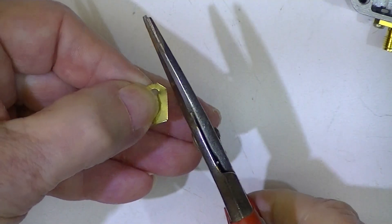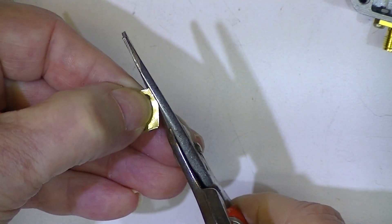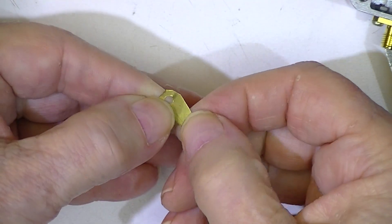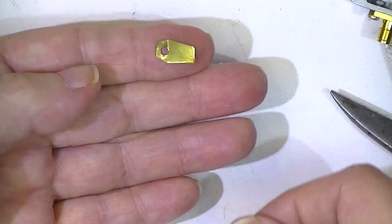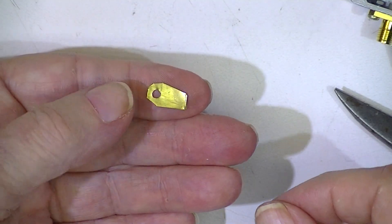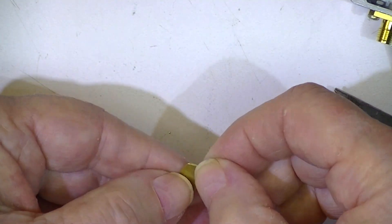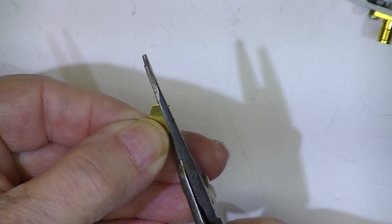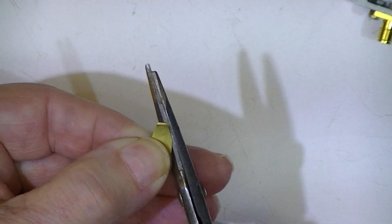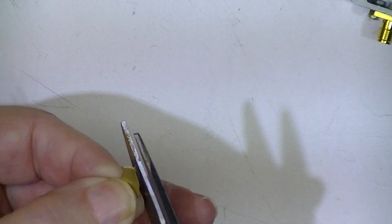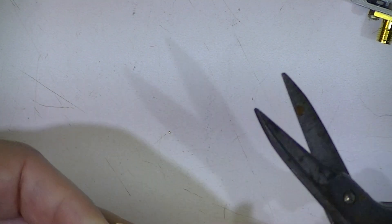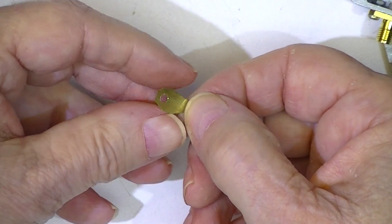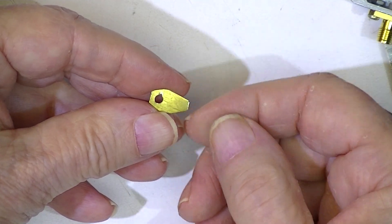So while I had the four thousandths of an inch shim stock out, I made this teeny tiny solder tab. It's pretty crude, but I think it'll do the job.